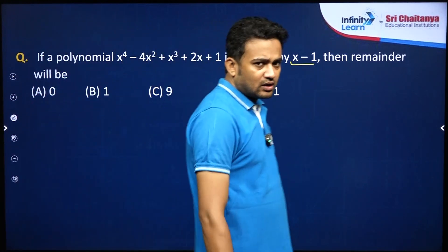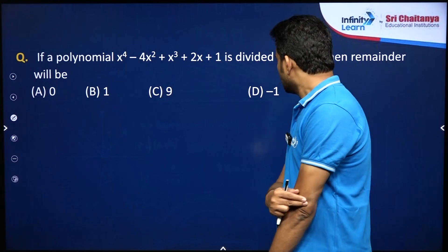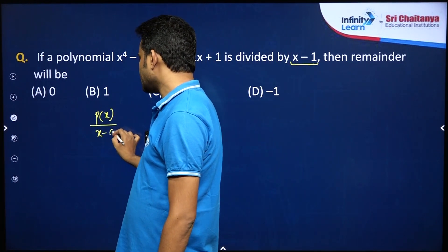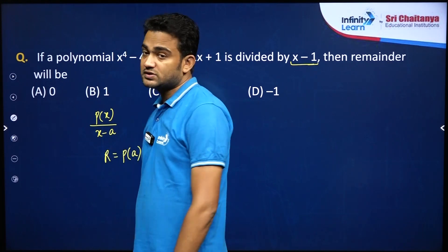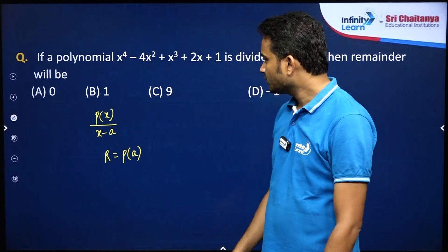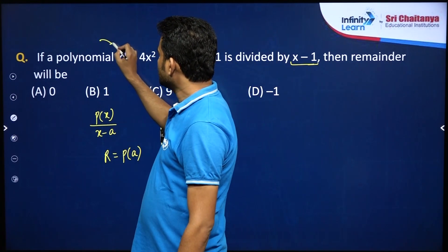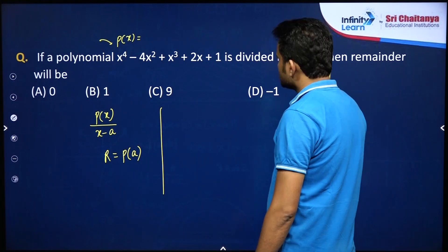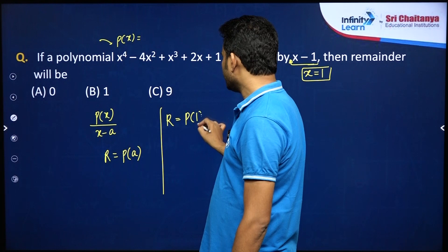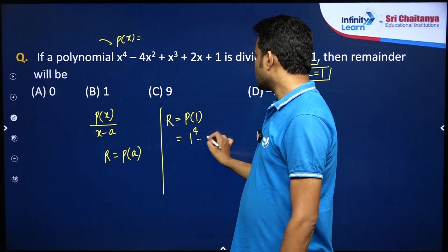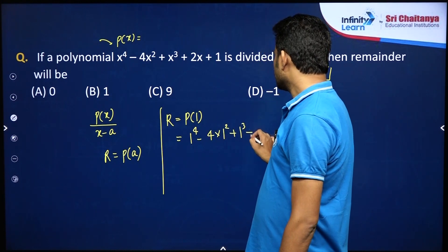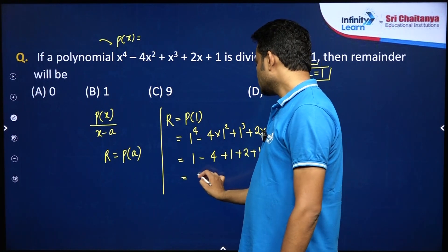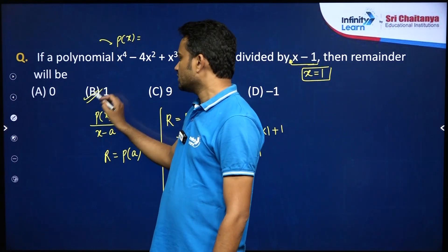So how to solve this question? In order to solve it, we will use the remainder theorem. What is remainder theorem? Suppose we have a polynomial P(x) and this polynomial is divided by x minus a, then the remainder is always P(a). We have already studied this in class 9. So let us use the remainder theorem. This divisor is x minus 1, so from here x is 1. The remainder will be P(1) — simply replace x by 1. So 1 power 4 minus 4 into 1 square plus 1 cube plus 2 into 1 plus 1 gives us 1 minus 4 plus 1 plus 2 plus 1, that is 5 minus 4, which is 1. So the right answer is option B.